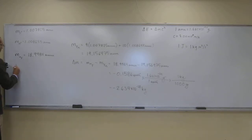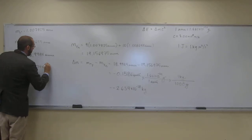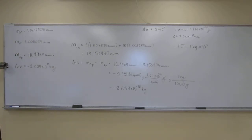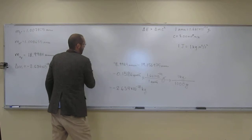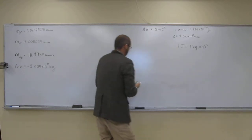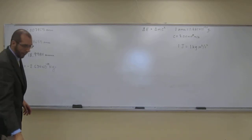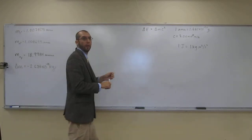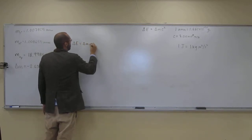So I'm going to write down the change in mass: negative 2.634 times 10 to the negative 28 kilograms. Now let's plug into our E equals MC squared equation: delta E equals delta M times C squared.